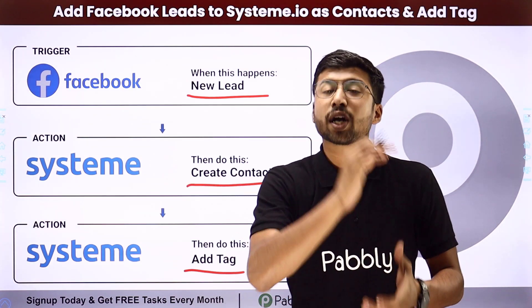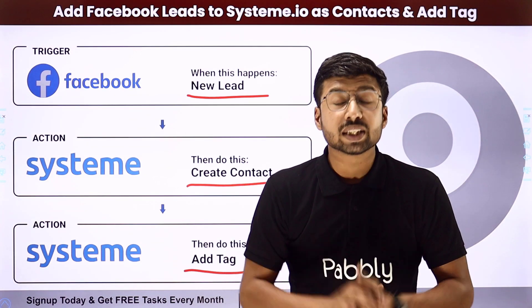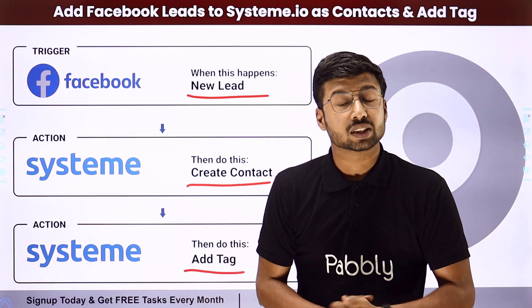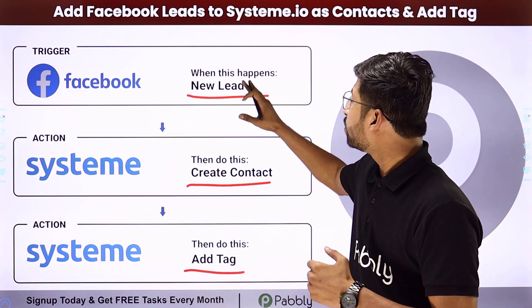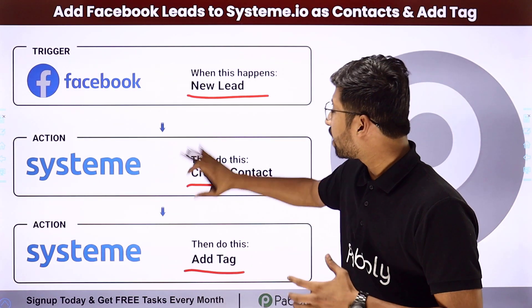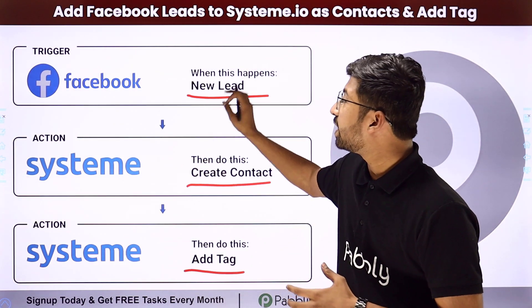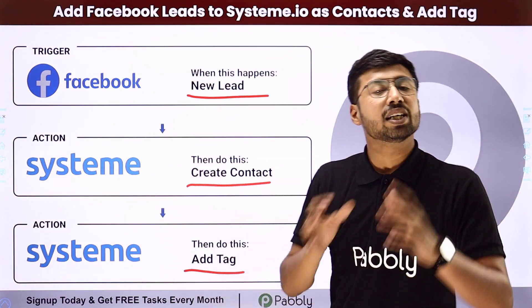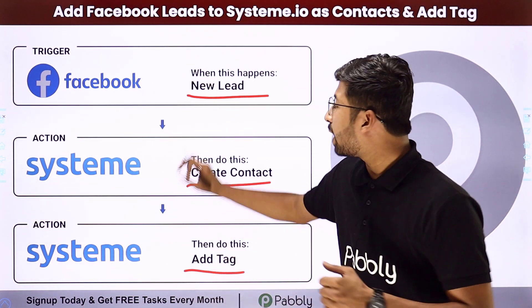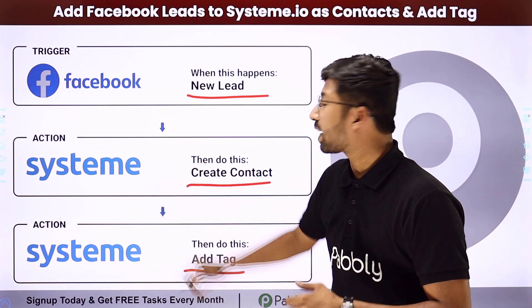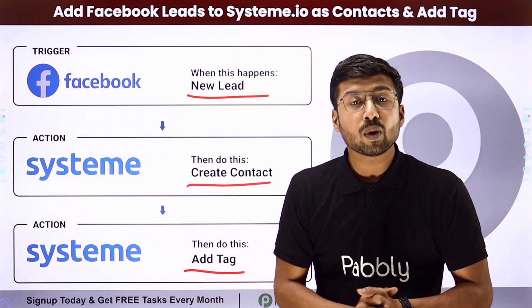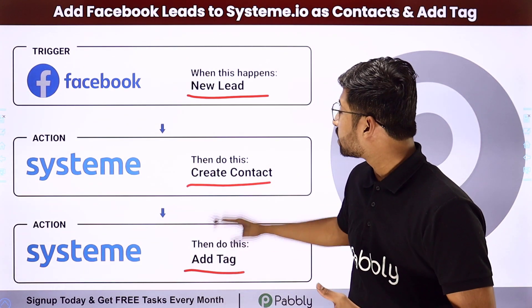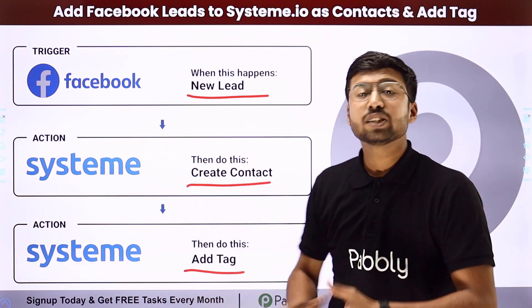You can actually automate this complete process. In this automation, whenever a new lead will be generated, automatically with the same details, the lead will be added as a contact in Systeme.io and we are going to add a tag to the same contact as well.